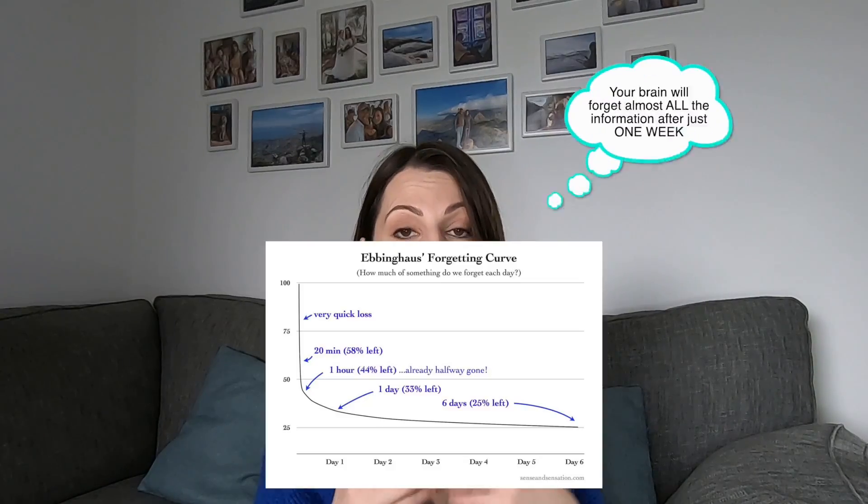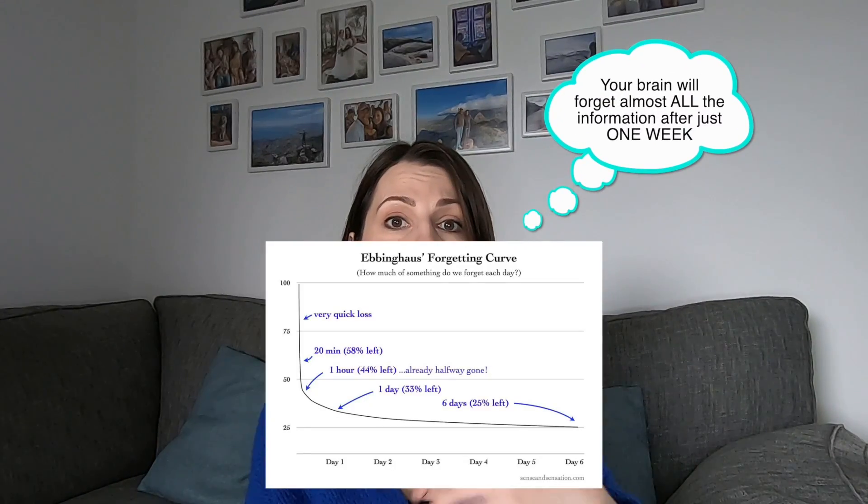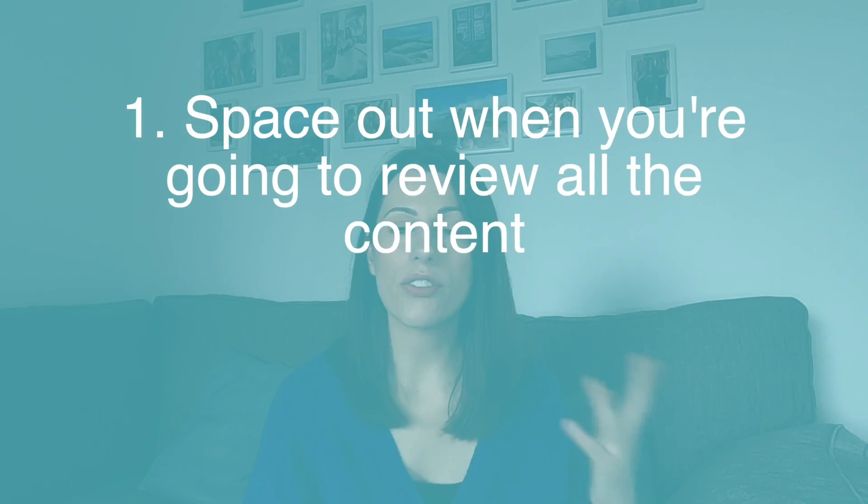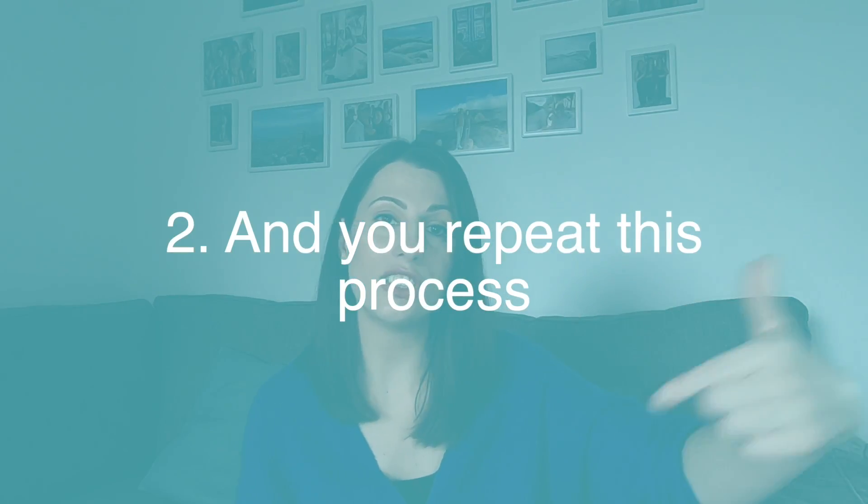Did you know that your brain will forget half of what you've learnt in a lesson within the first hour after that lesson finishing? And if you don't look over the information at all in a week after the lesson, it will be almost completely forgotten. This is why ideally you need to be revising using something called spaced repetition — where you space out when you're going to review all of the content and you repeatedly do this.